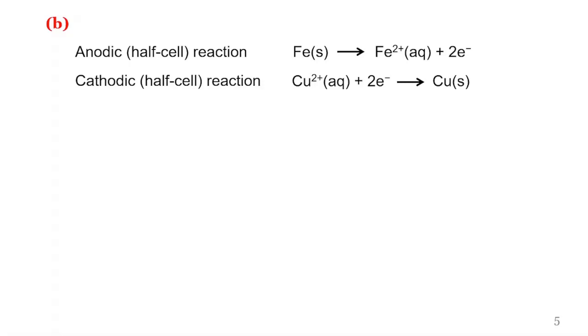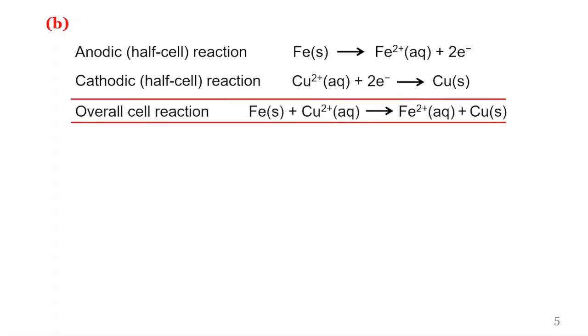The second question has to do with writing the overall cell reaction. We begin with the anodic half cell reaction, which is iron being oxidized to Fe²⁺. For the cathode compartment, copper is reduced from Cu²⁺ to zero. We combine the two half cell reactions and obtain the overall cell reaction with two electrons on this side canceling the one on the other side.